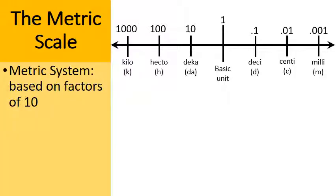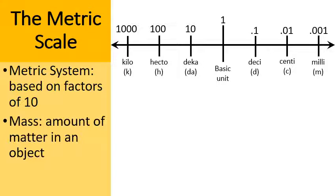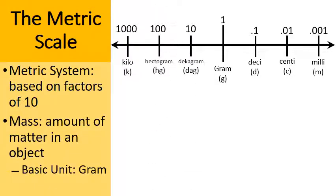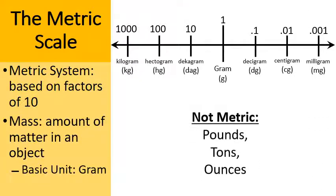Now we were measuring in meters because we were measuring length. What if I'm trying to measure mass — how much matter an object has? The basic unit would be a gram. Ten grams is a decagram, 100 grams is a hectogram, a thousand grams is a kilogram. On the other side: a tenth of a gram is a decigram, a hundredth is a centigram, and a thousandth is a milligram. You might be used to pounds, tons, and ounces, but these are part of the imperial measuring system — they are not metric.